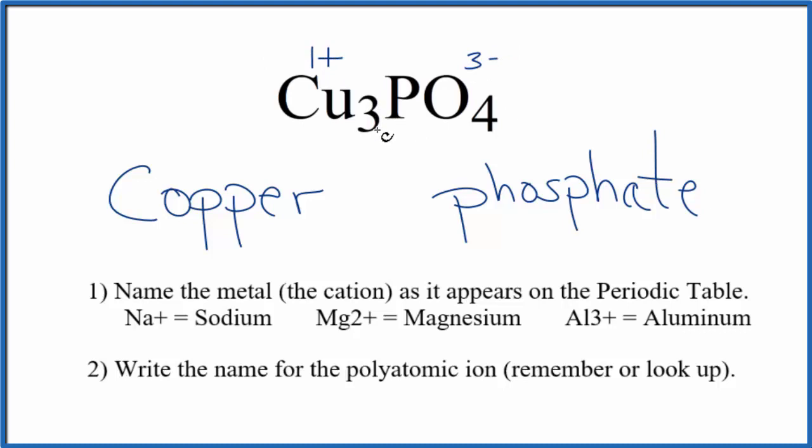To show that each one of these copper atoms has a 1 plus ionic charge, we put the Roman numeral 1 in parentheses between copper and phosphate.